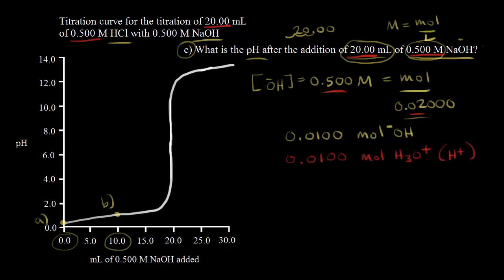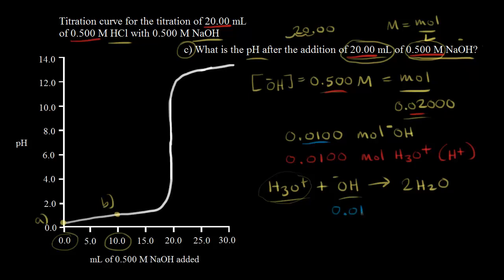So we have an equal number of moles of base as we do of acid. The base we're adding is going to neutralize the acid present. The H₃O⁺ donates a proton to OH⁻, giving us H₂O — two molecules of H₂O in total. We're starting with 0.01 moles of OH⁻ and 0.01 moles of acid, so we have exactly enough base to completely neutralize our acid.